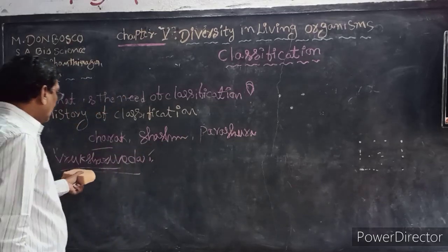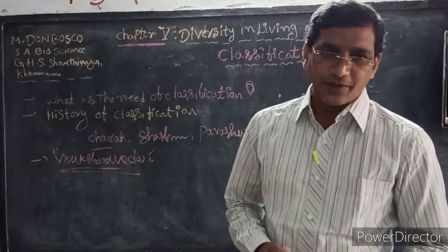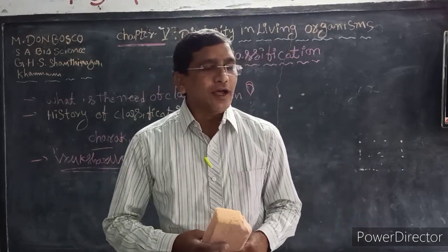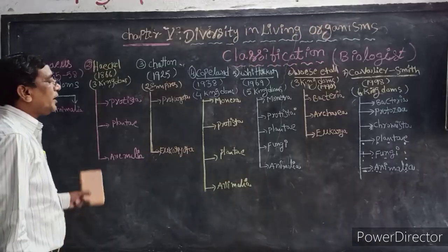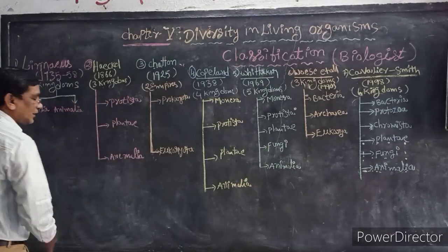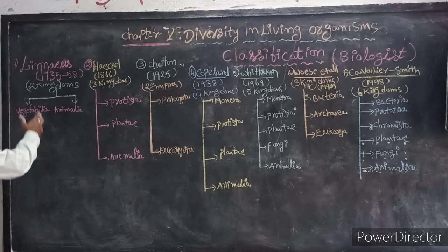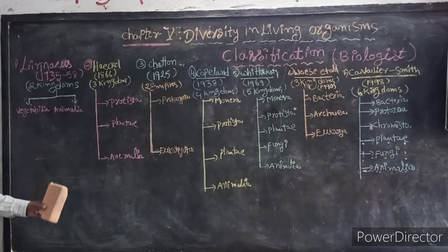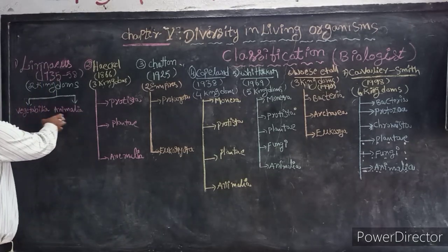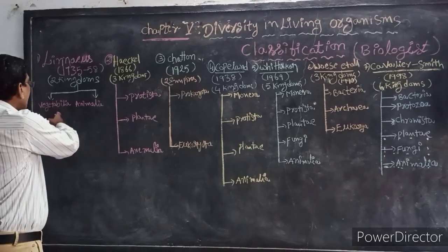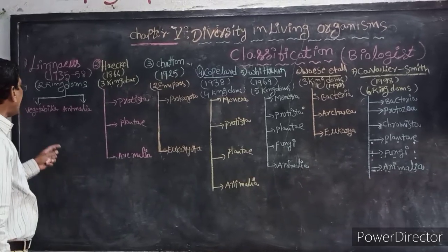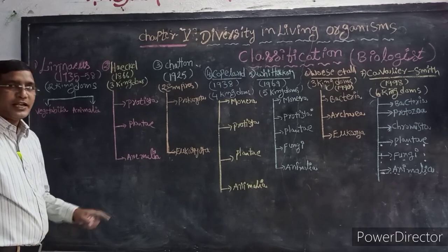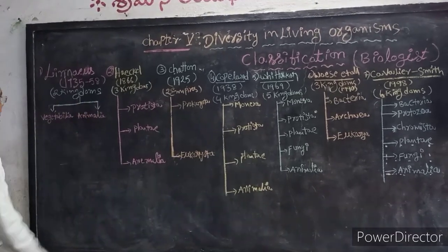Now let us study how biologists from the 16th century have been trying to classify the diverse organisms so far. Many biologists classified all living organisms in different ways. First, Linnaeus, in 1735, classified all living organisms into two kingdoms: one is Vegetabilia — all living plants grouped into one kingdom — and the other is Animalia — all living animals grouped into another kingdom.